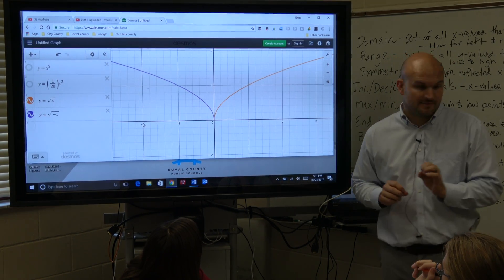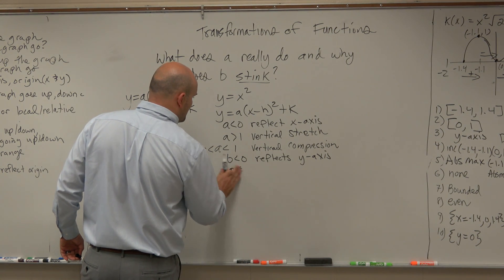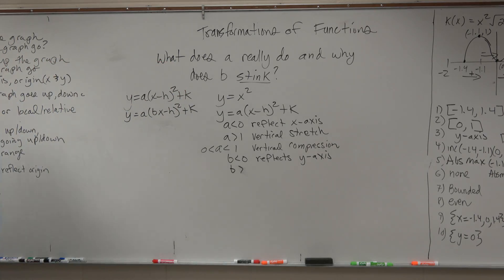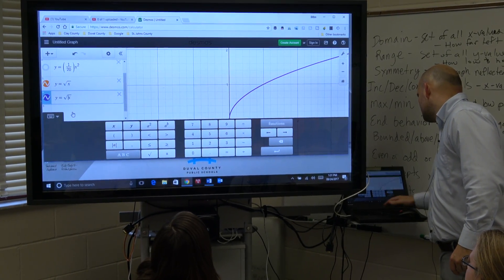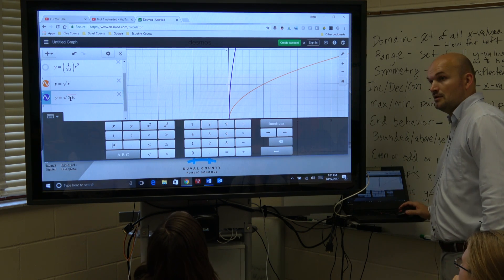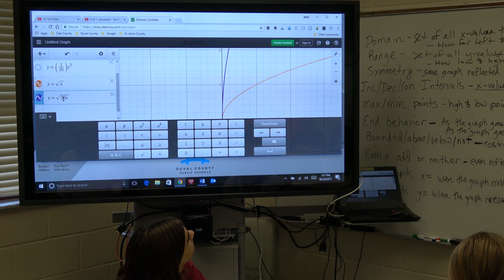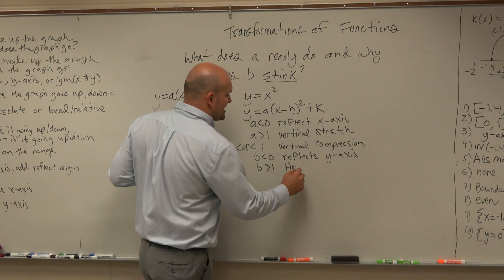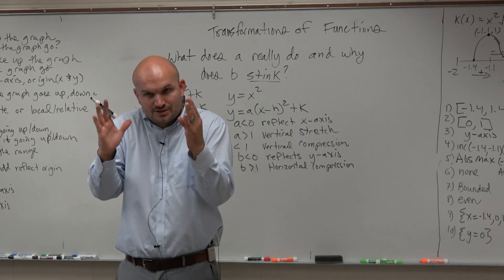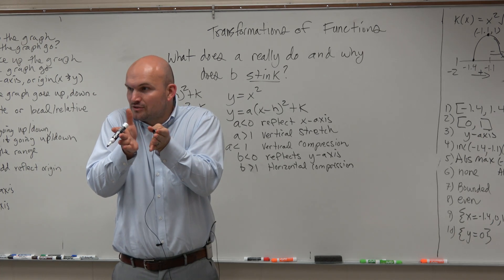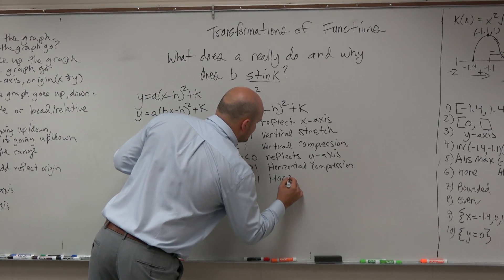Now let's look at some other things. When A was greater than 1, it was a vertical stretch. So what happens when B is greater than 1? Let's do 2. It kind of looks like a vertical stretch again — but it's actually not. The way we use this is actually a horizontal compression. So if 0 is less than B which is less than 1, that is going to be a horizontal stretch — the opposite of A.